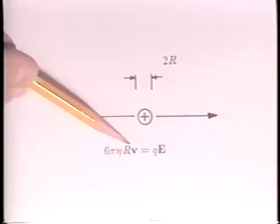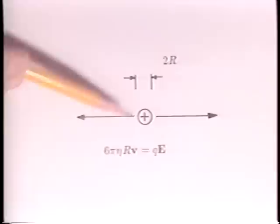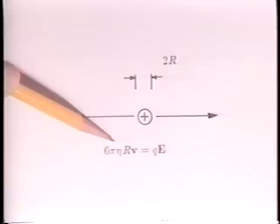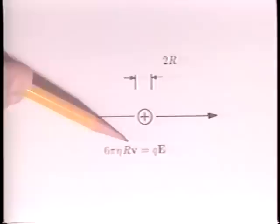For example, if such particles were spherical with a radius r, this force would be the Stokes drag, where eta is the viscosity of air. The particle velocity is then proportional to the applied electric field.